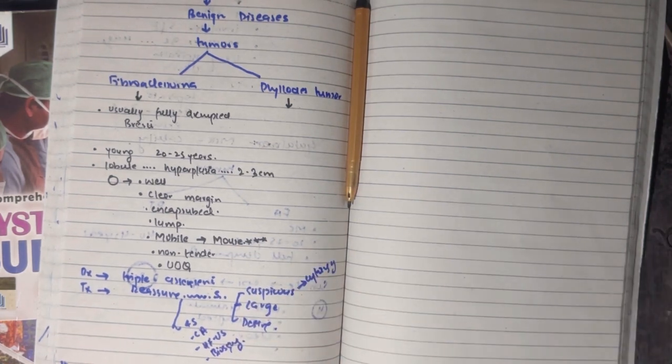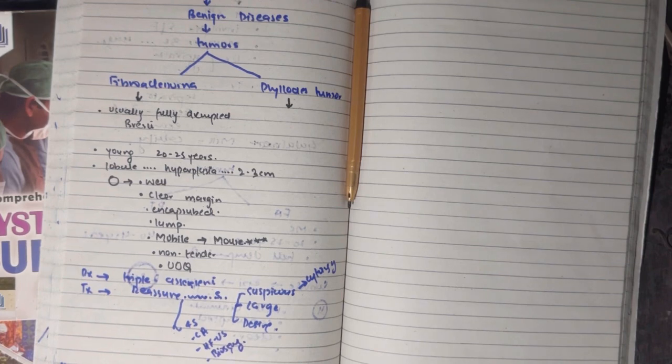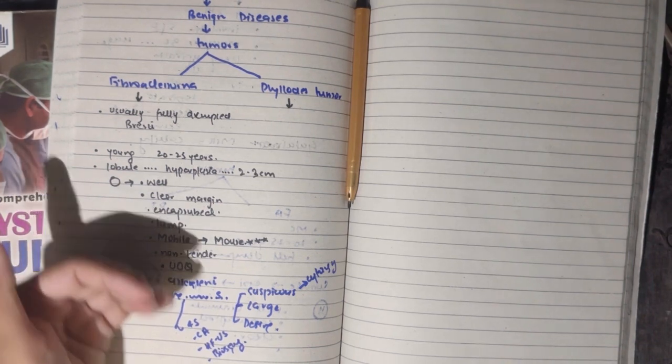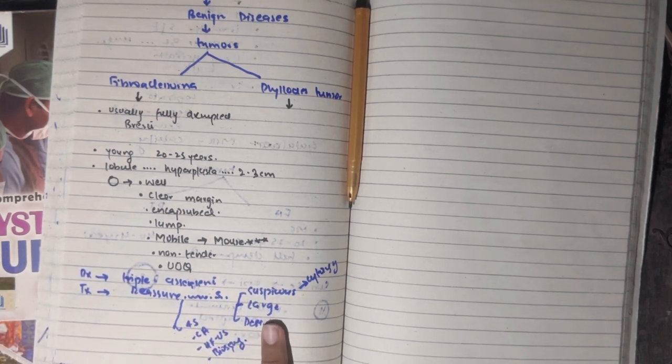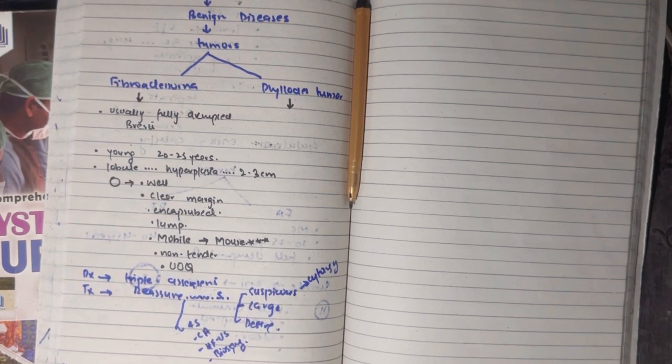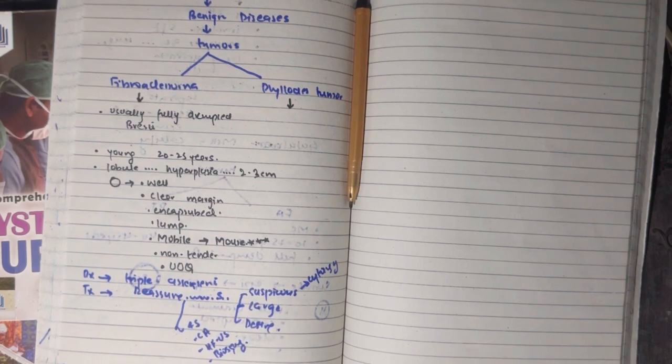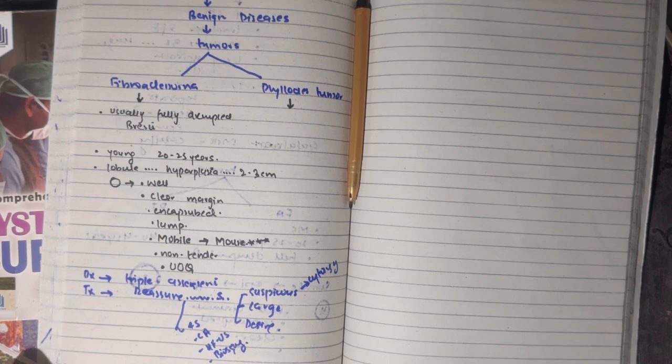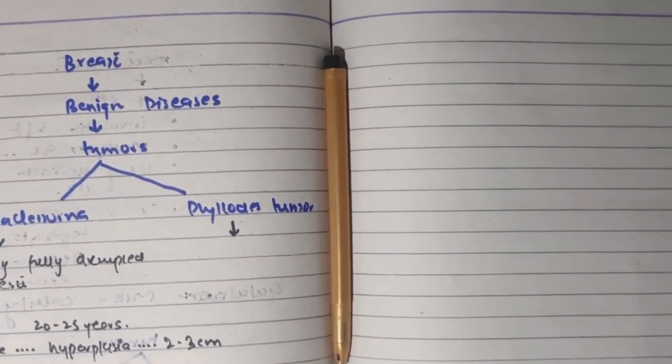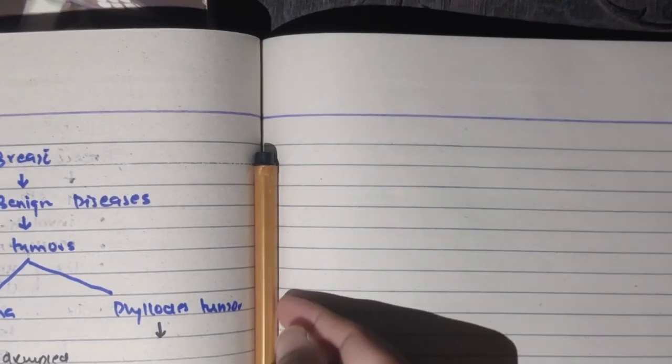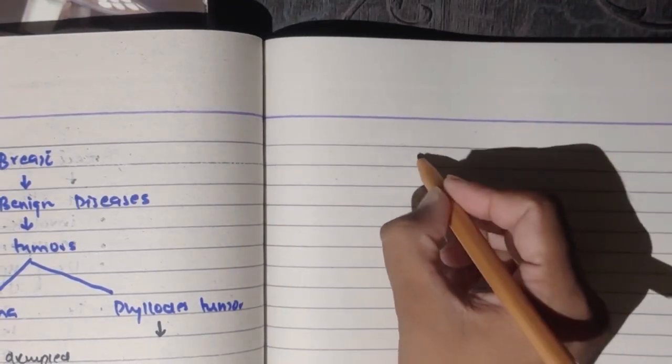If it is very giant, rapidly growing, then we perform enucleation. Mostly we do excision if needed. We do not need extensive surgery because this is a benign disease and this will automatically resolve after menopause.